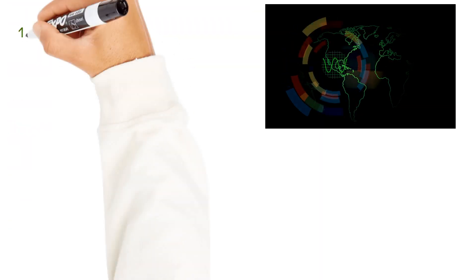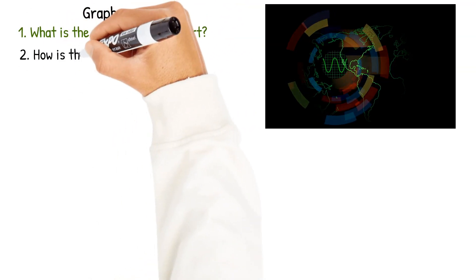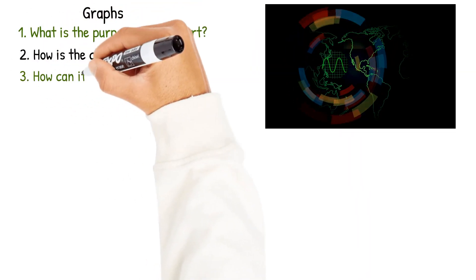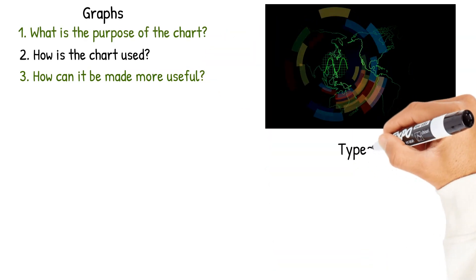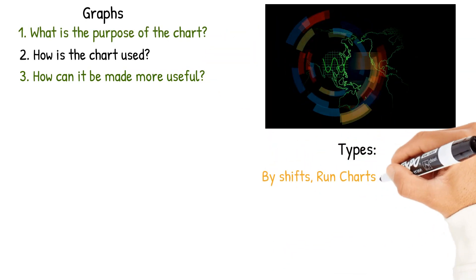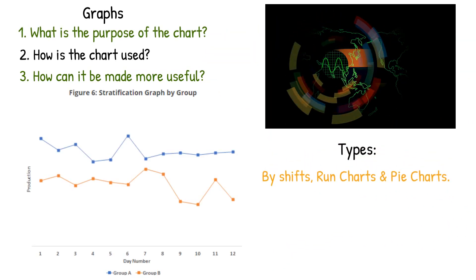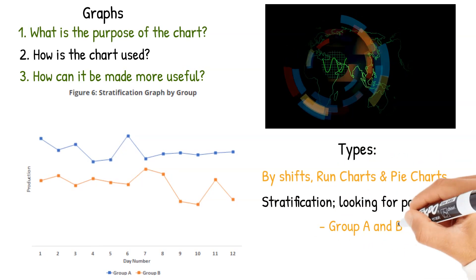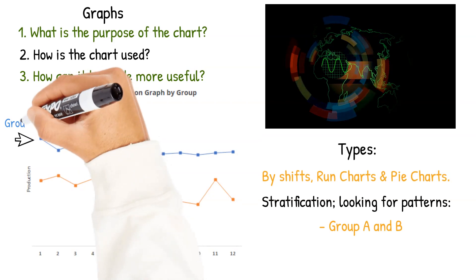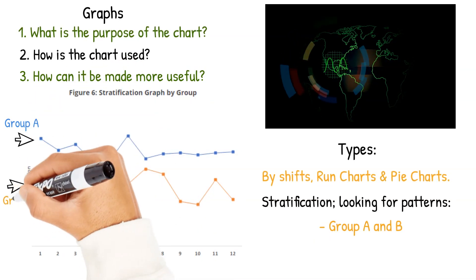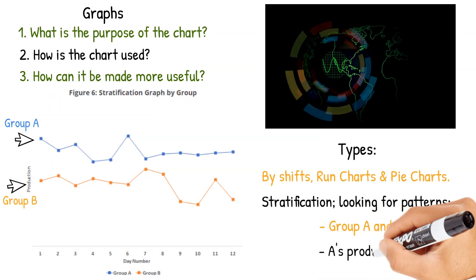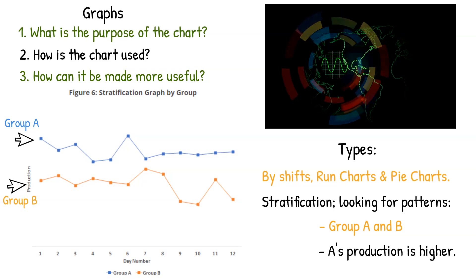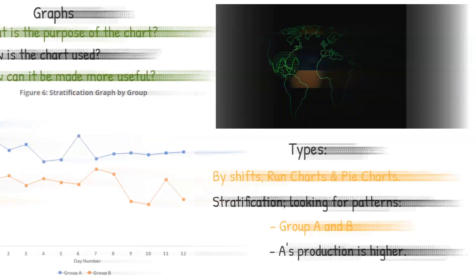Then he talked about graphs as another simple tool. He had three questions about graphs: What's the purpose of the chart? How is the chart used? And how can it be made more useful? He talked about types of shifts, run charts, and pie charts. Also stratification like this one where you're looking for a pattern between A and B. It appears you can see group A, the blue, has more production than group B, in the orange.